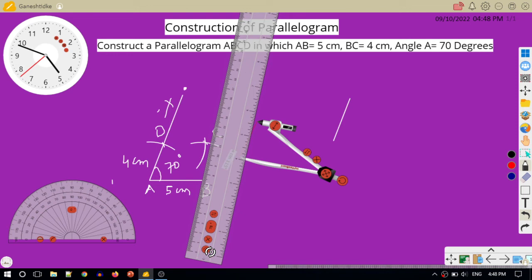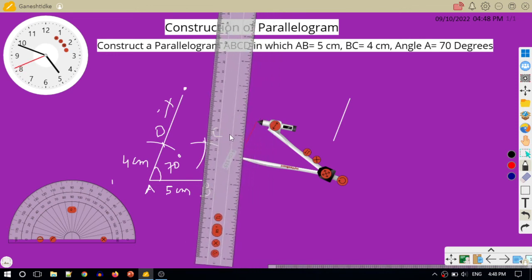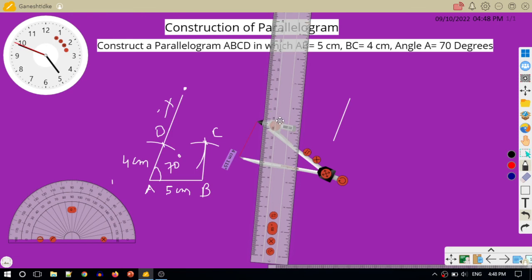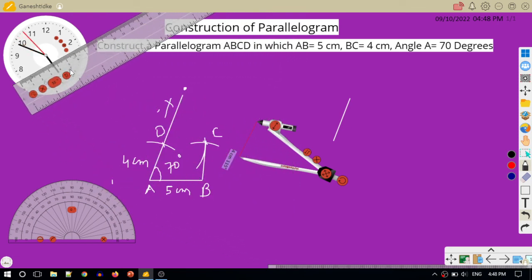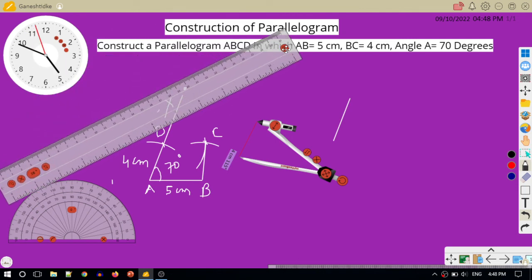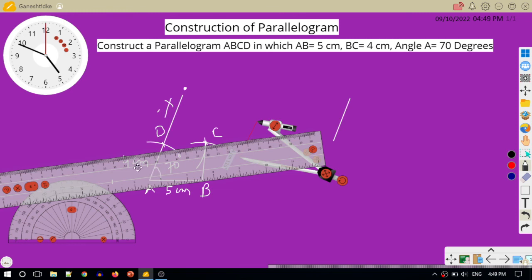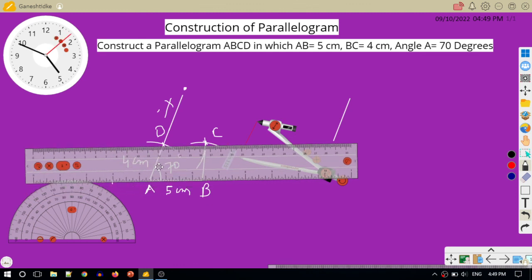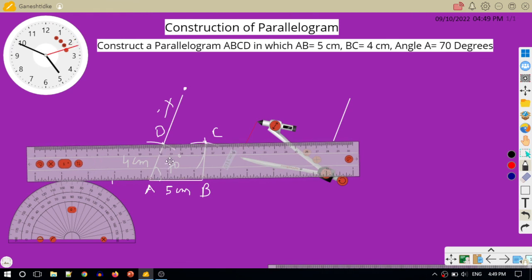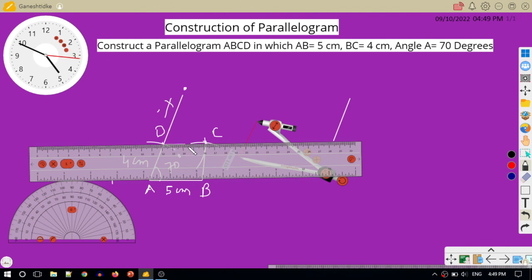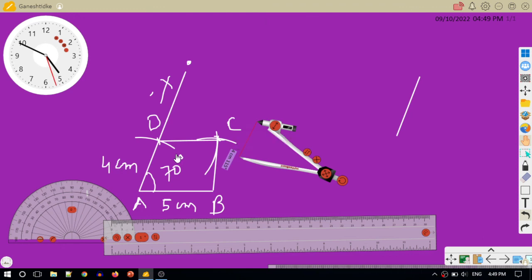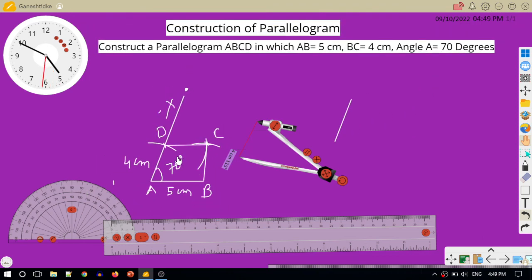I will join BC. After that I will join DC. This is my required parallelogram. What I will do? I will enlarge it so you can view it clearly. Can you see this? Thank you.